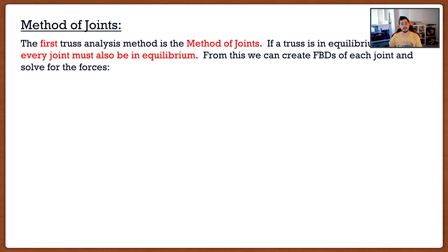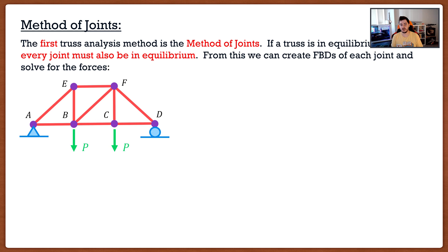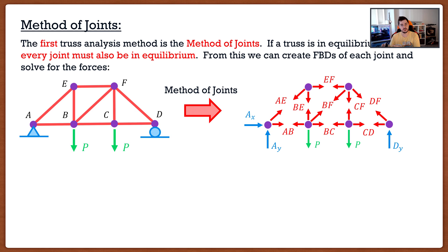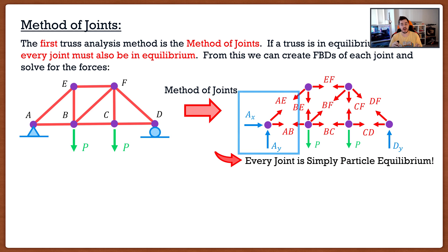The first of the two truss analysis methods is the method of joints. The key idea is that if a truss is in equilibrium, then every joint inside the truss must also be in equilibrium. So we can take a truss with loads on it and explode it — separate it into all of its joints, going from one free body diagram to six, one for every joint. We can analyze each joint separately using force equilibrium. Since all forces interact at the same point, this is a case of particle equilibrium — we don't have to consider moments.